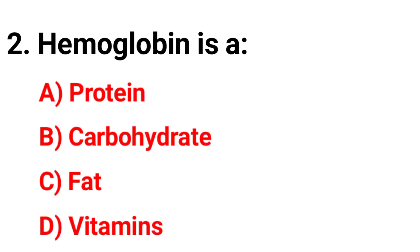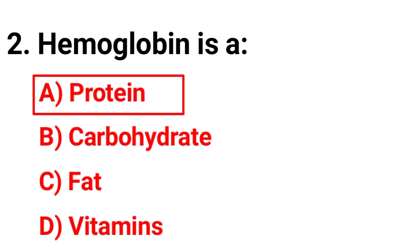Question 2: Hemoglobin is — option A: protein, B: carbohydrate, C: fat, D: vitamins. The correct answer is option A — protein. Hemoglobin is a protein.